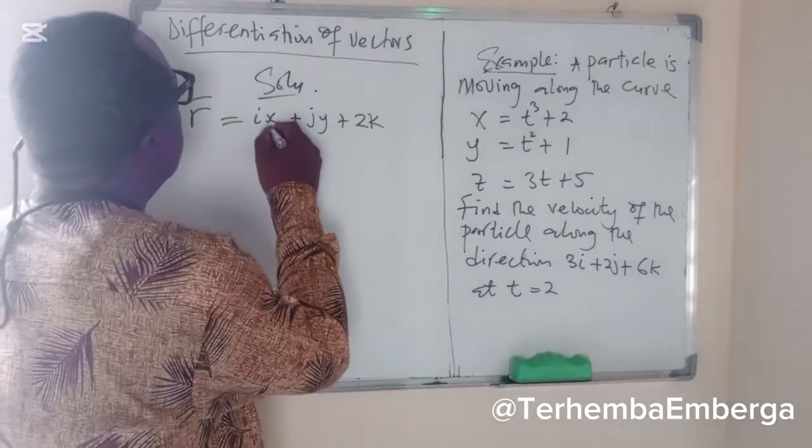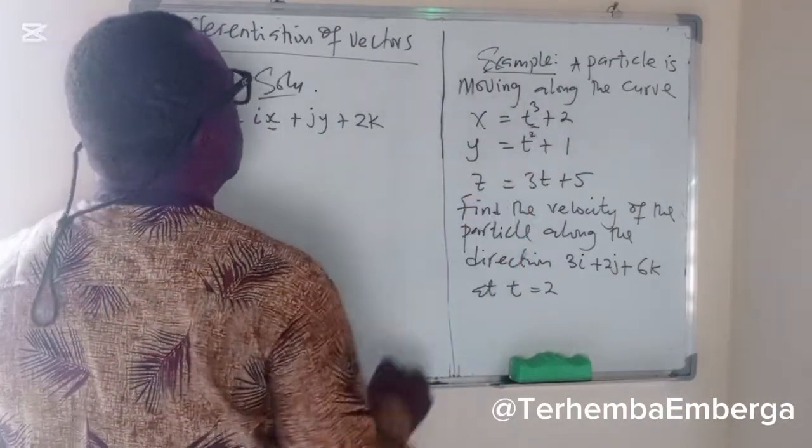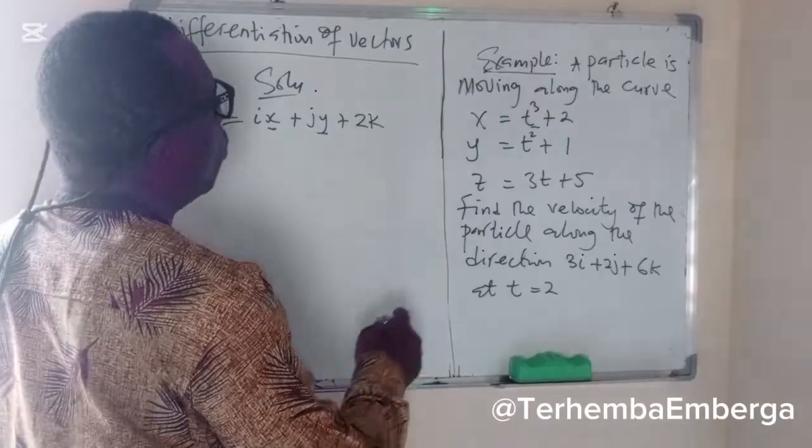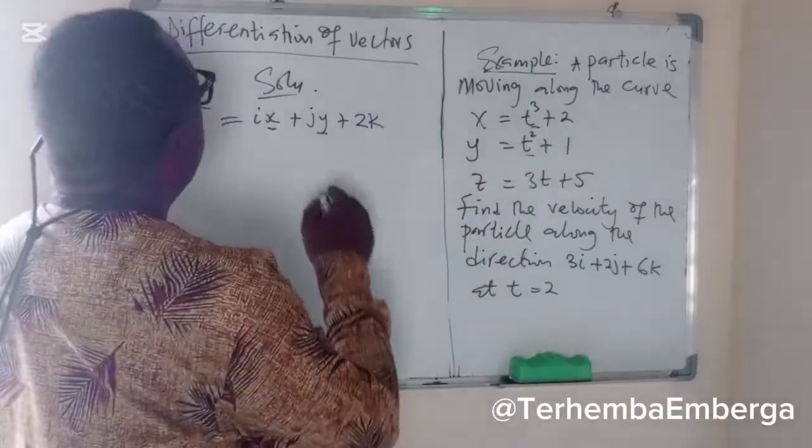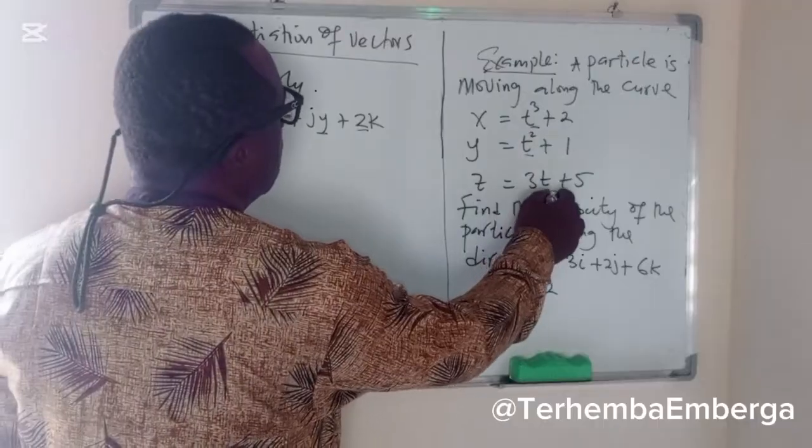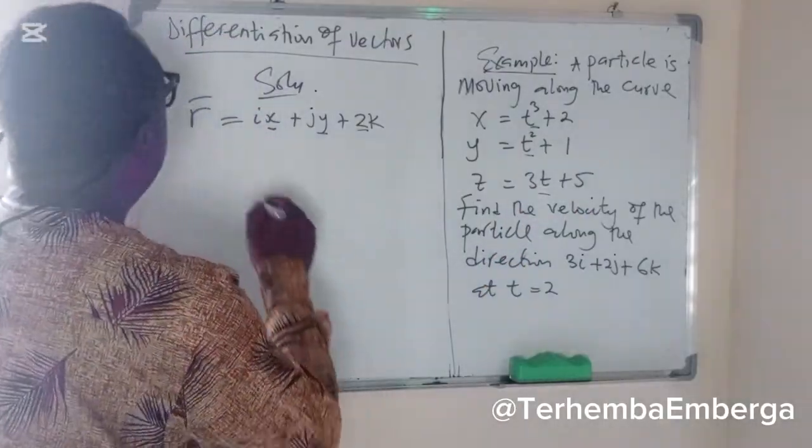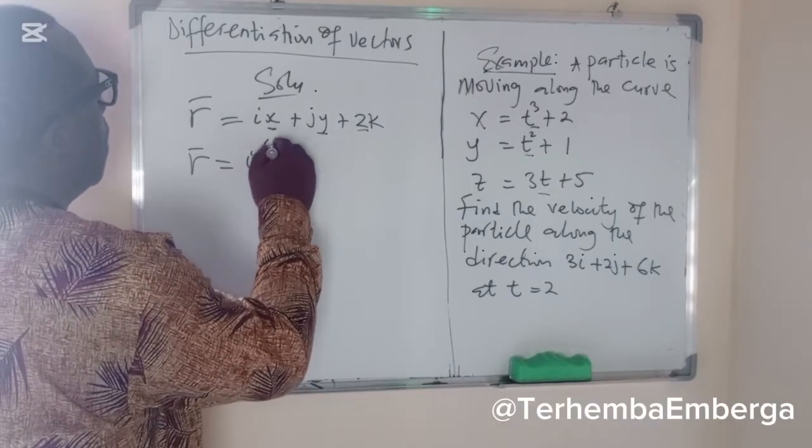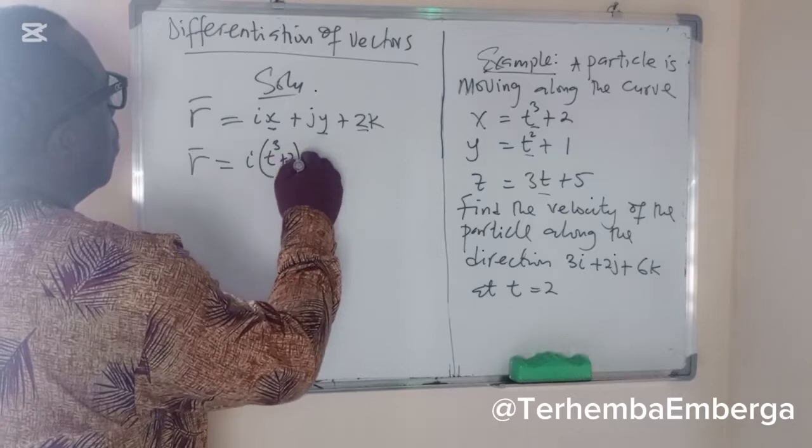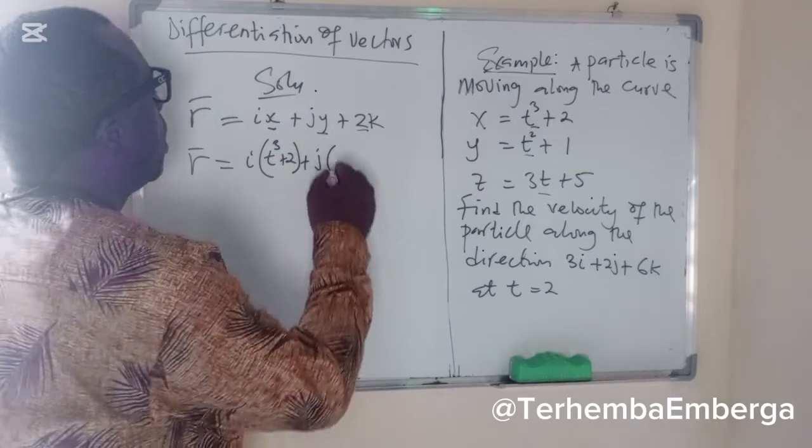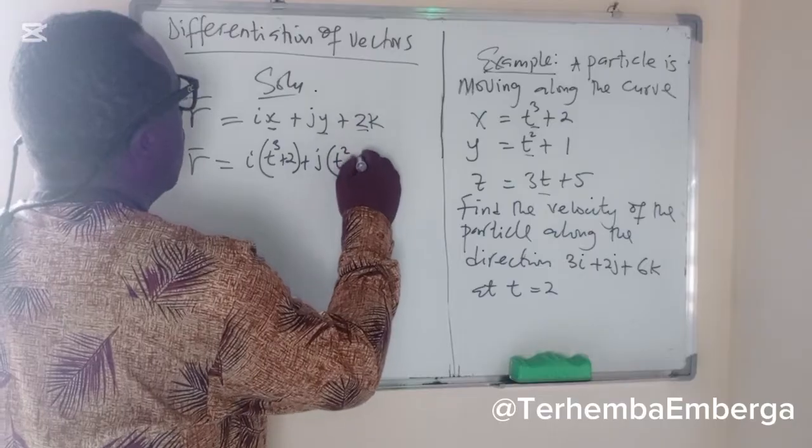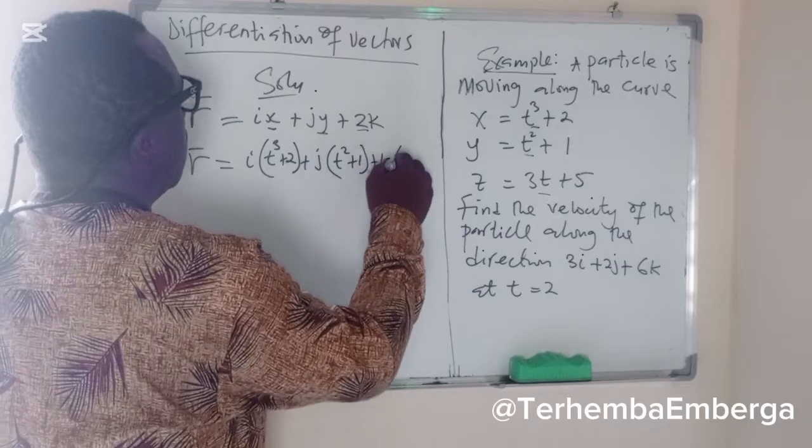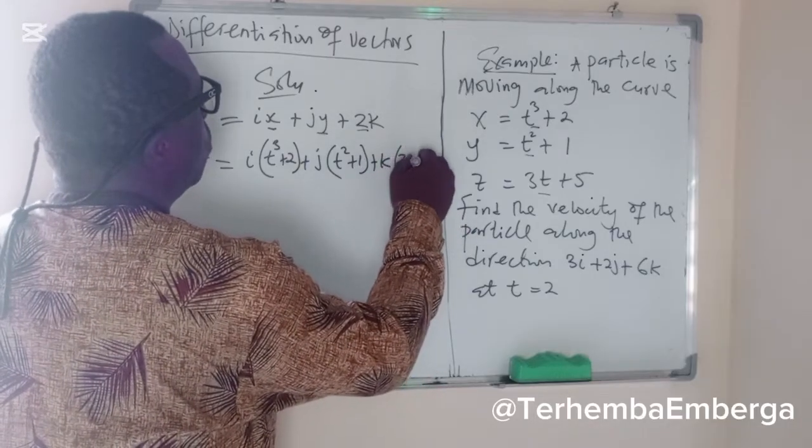So, at this point, we'll substitute the components t raised to the power 3 plus 2. At y, we'll substitute the component t squared plus 1. At z, we'll substitute the component 3t plus 5. And this becomes i into t raised to the power 3 plus 2 plus j into t squared plus 1 plus k into 3t plus 5.